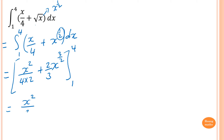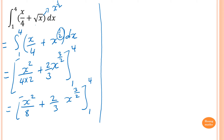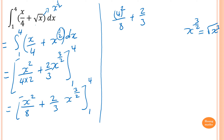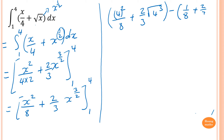Simplifying first: that's x squared over 8, plus 2 thirds x to the power 3 over 2, from 1 to 4. Substituting 4: 4 squared over 8, plus 2 thirds of square root of 4 cubed. Recall that x to the 3 over 2 is the same as square root of x cubed, so that's square root of 4 to the power 3. Then minus: substituting 1, so 1 over 8, plus 2 thirds times 1, which is just 2 thirds.